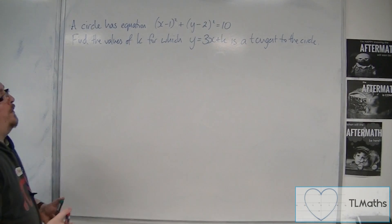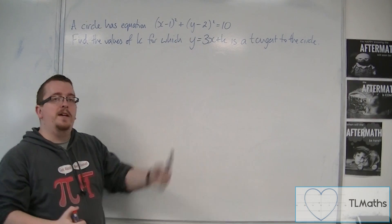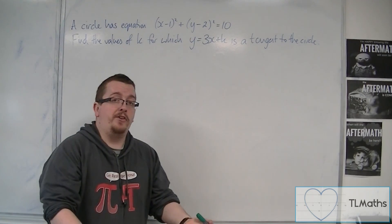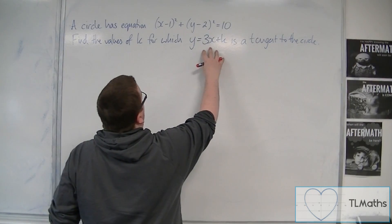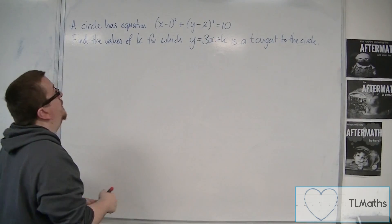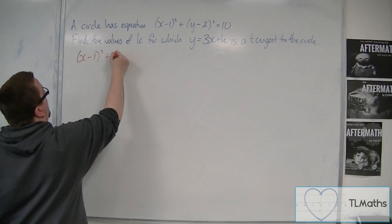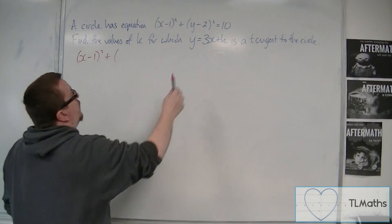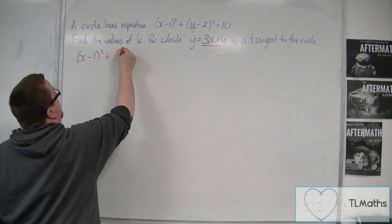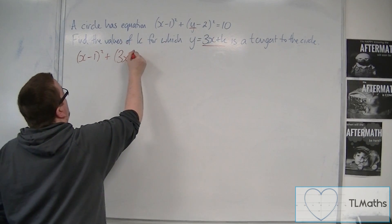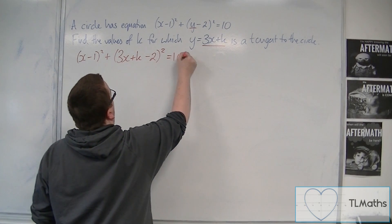If we want to determine where this line intersects the circle, we're going to have to use simultaneous equations. So we're going to substitute y equals 3x plus k into the circle equation, giving us (x minus 1) squared plus (3x plus k minus 2) squared equals 10.